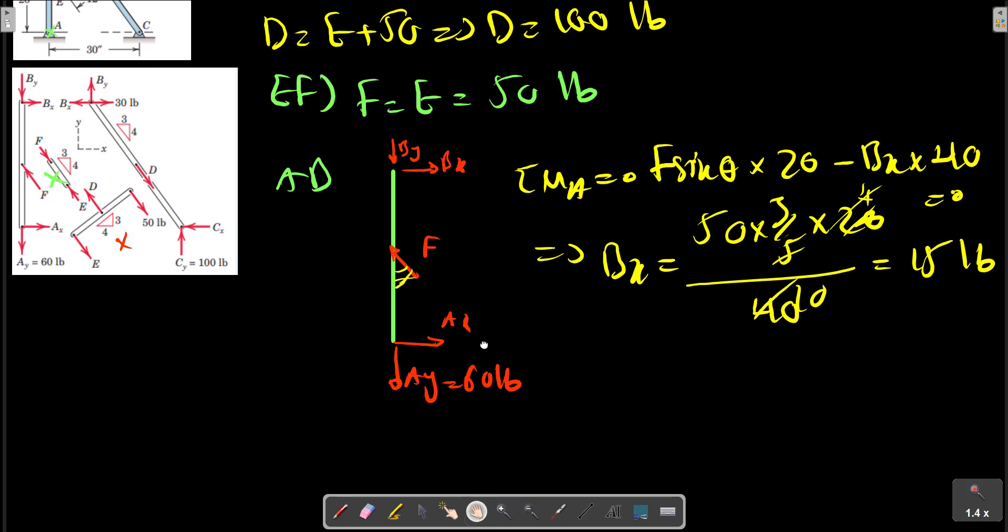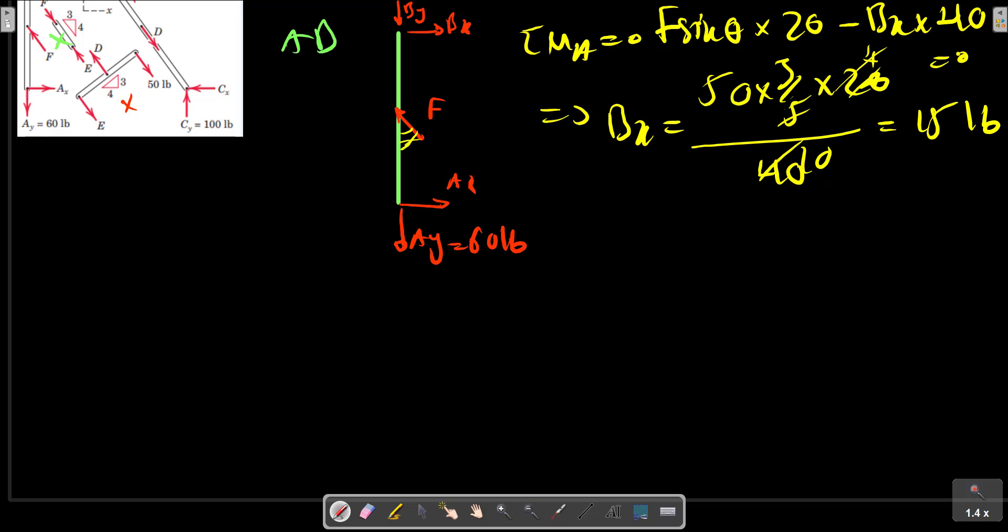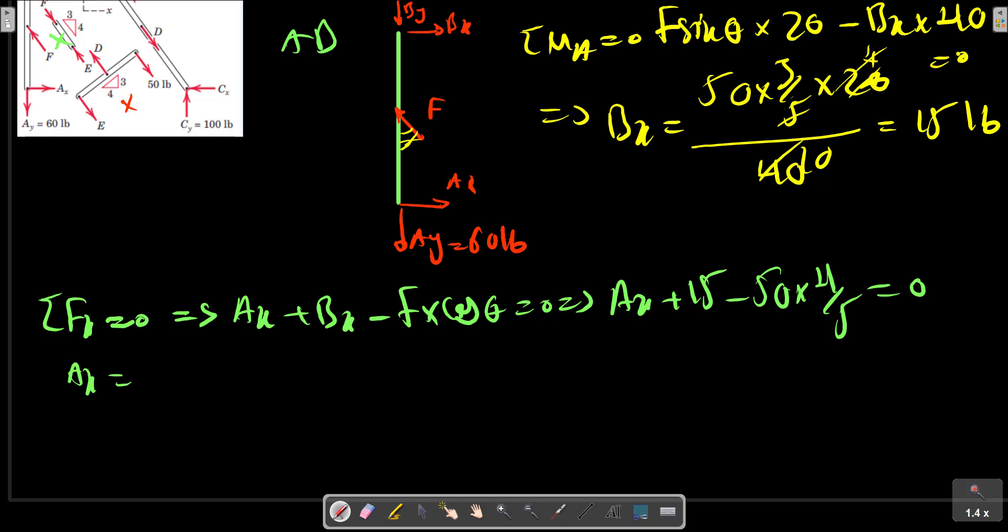Sigma Fx equals zero. Ax plus Ax minus Ay, I would like to put F cos theta equals zero. Ax is 15, 50 multiply. Ax is 40 minus 50, 25. Ax equals 25, 15.